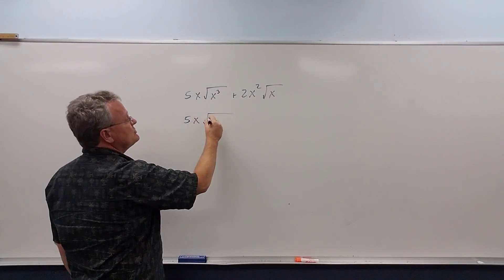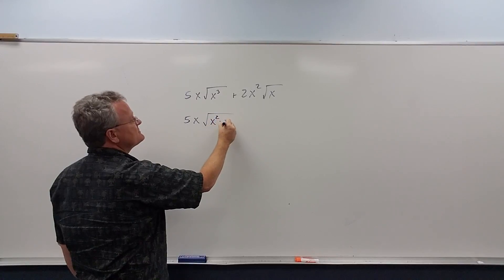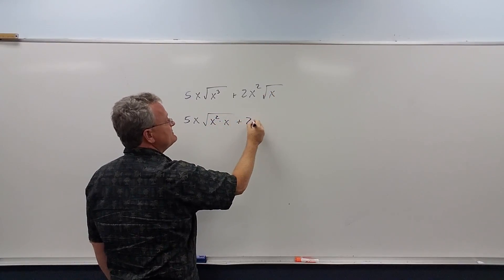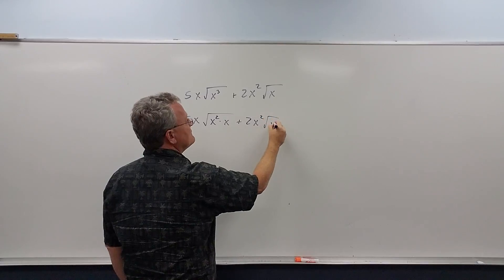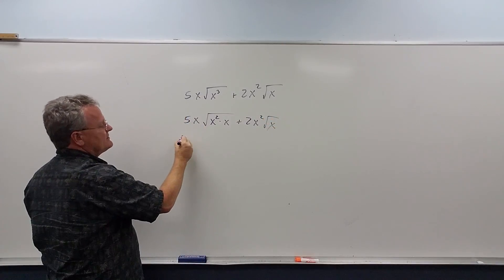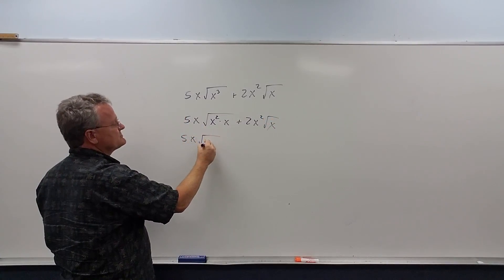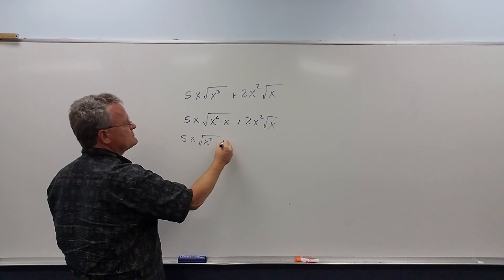So x cubed we want to write as x squared times x. This cannot be simplified. Now I'll do this step by step. So this is the square root of x squared times the square root of x.